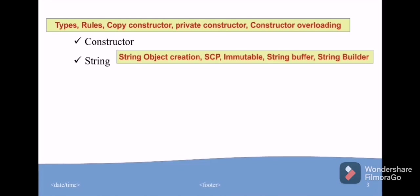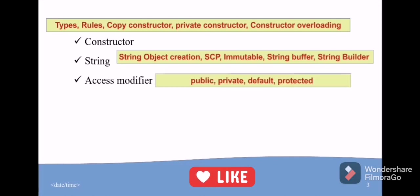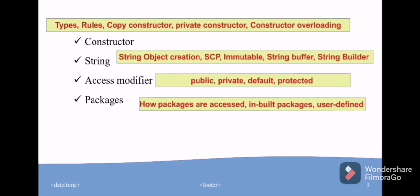In string, check how object is created for string, what is SCP and why string is immutable, string buffer, string builder, and the differences of them. These are the topics in access modifier: public, private, default, and protected.